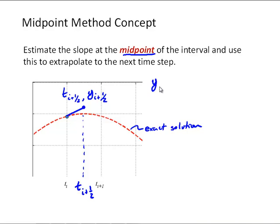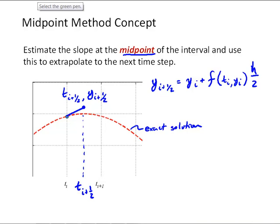The first step is: yi plus one half equals yi plus f(ti, yi) times h over 2, because we're only going to half the interval. Then when we reach that midpoint, we take the slope at that midpoint, which is f evaluated at ti plus h over 2 and yi plus one half.